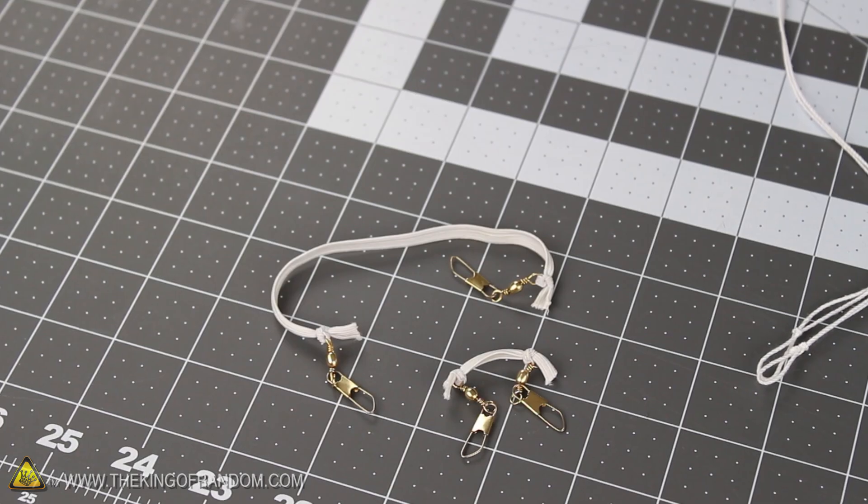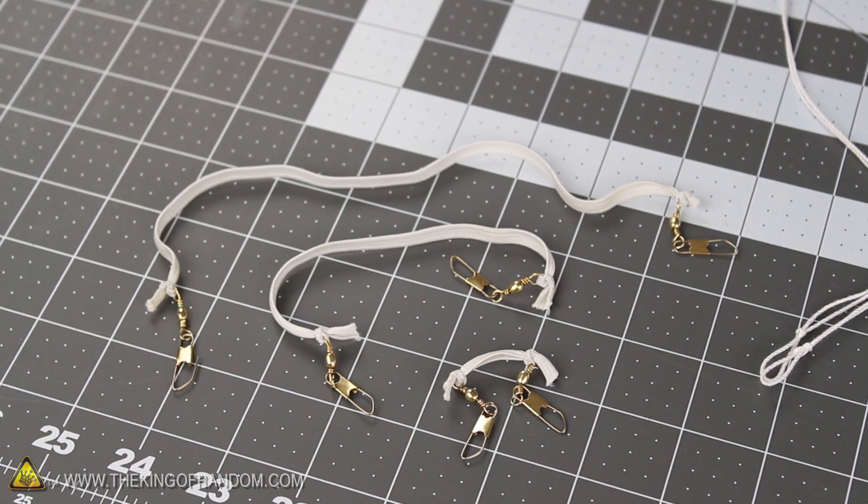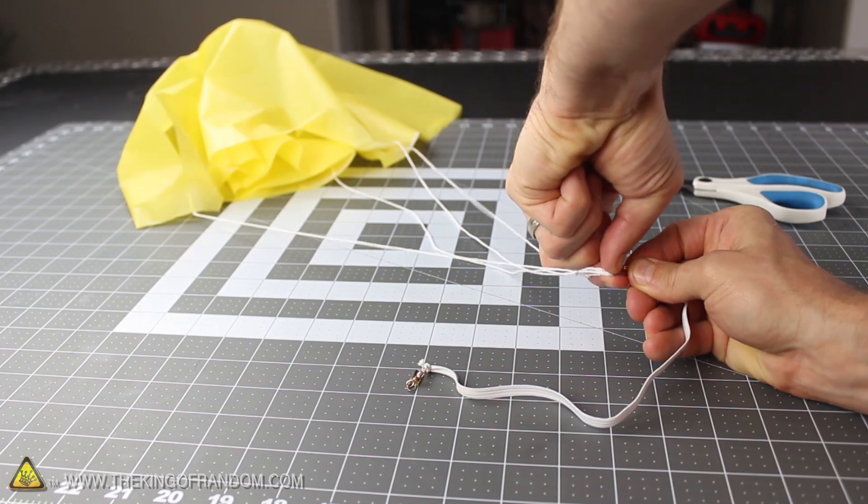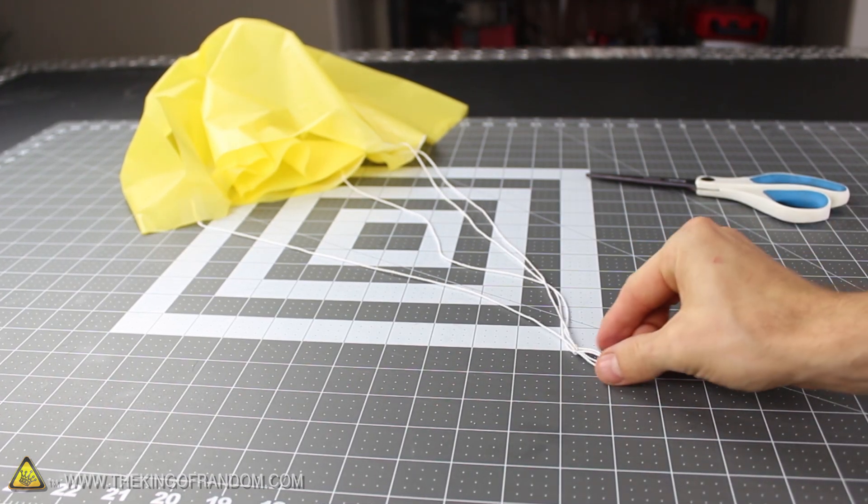If you want, you can even attach barrel swivels to both ends of the elastic cording and make them any length you need. This way, if your lines get tangled to the point of frustration, they'll be easy to unclip and fix within seconds.